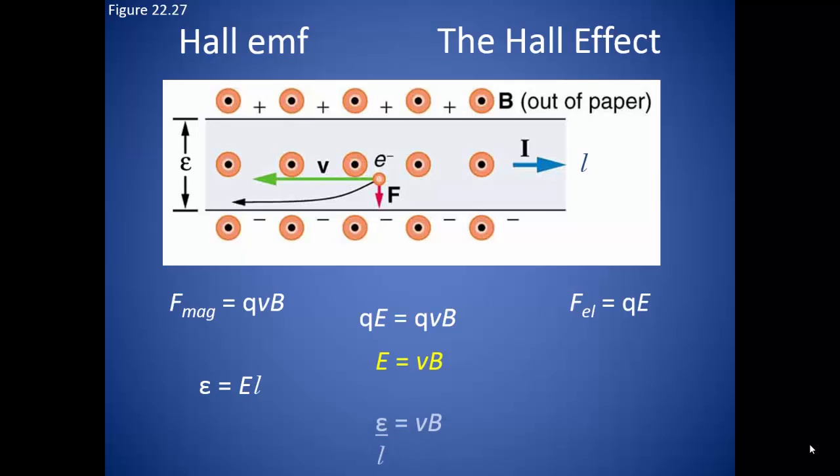Since it is highly likely we want to know the voltage that is created here, we can substitute in the electric field and find that the voltage created by the Hall effect to be equal to the drift velocity of the electrons times the strength of the magnetic field times the distance between the charges.